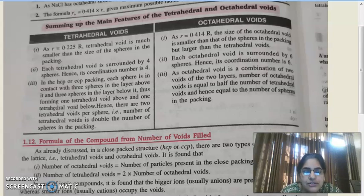If your solid has n number of atoms, then tetrahedral voids will be 2n because they are double. And if I talk about octahedral voids, they remain same. If there are n number of atoms, then n number of octahedral voids. This is the main part which I want to discuss before discussing the numerical.